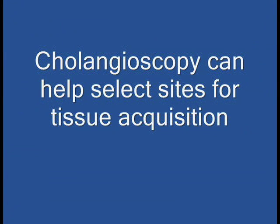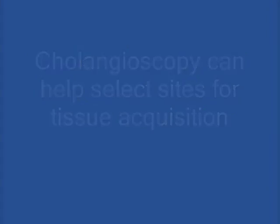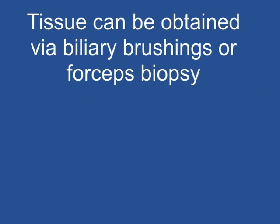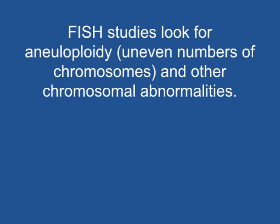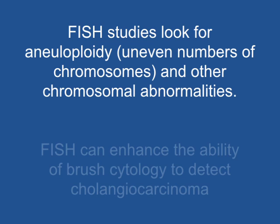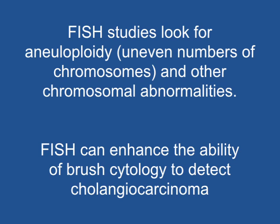Cholangioscopy can help select sites for tissue acquisition. Tissue can be obtained via biliary brushings or forceps biopsy. Biliary brushings can be sent for routine cytology or FISH analysis. FISH studies look for aneuploidy and other chromosomal abnormalities. FISH can enhance the ability of brush cytology to detect cholangiocarcinoma.